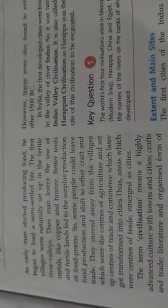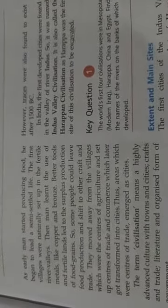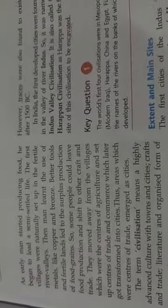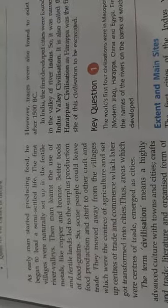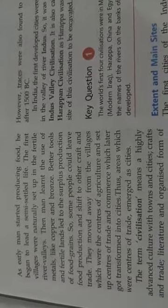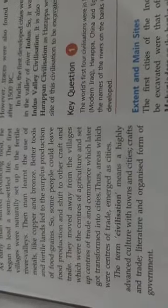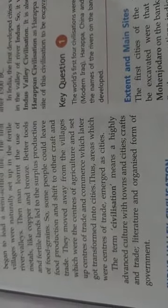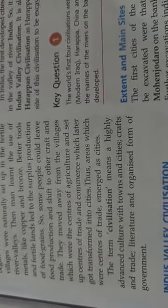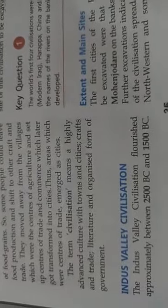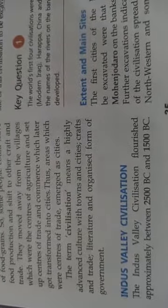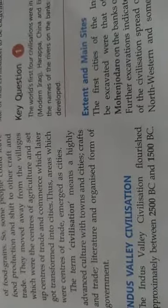As you know, early men started producing food and they became the food gatherer. After, in the Neolithic age, they became the food producer, and then they civilized. The term civilization means a highly advanced culture with towns and cities, craft and trade, literature and organized form of government. Indus Valley civilization flourished approximately between 2500 BC to 1500 BC.